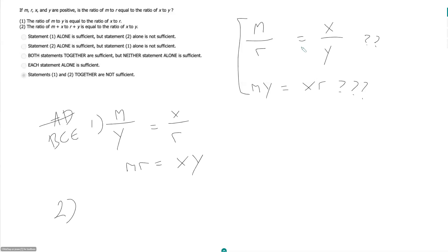Statement two: the ratio of m plus x to r plus y is equal to the ratio of x to y. If I want to do something similar, cross multiply.